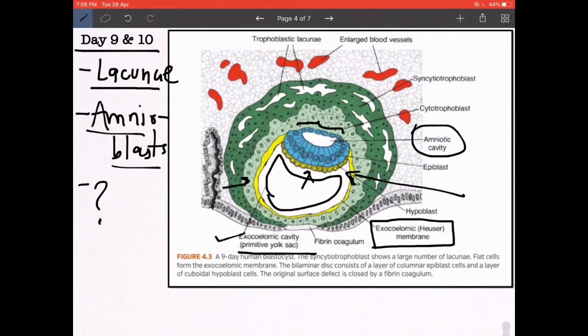Now if you observe, around this time, the entire structure has also completely invaded the endometrium, and there is a fibrin plug that is sealed from the outside. So we have now entered completely inside the endometrium. If you observe, the endometrium is also becoming highly vascular, and there are certain capillaries that are becoming bigger in size, and these are known as endometrial sinusoids.